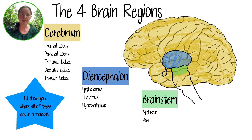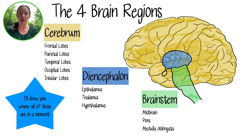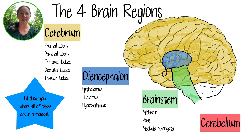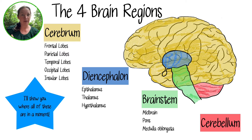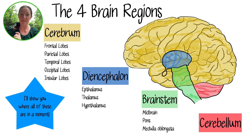Then there's the brain stem, which includes the midbrain, the pons, and the medulla oblongata. Last is the cerebellum, which literally means little brain. That is the fourth region of the brain. So there's the cerebrum, the diencephalon, the brain stem, and the cerebellum.